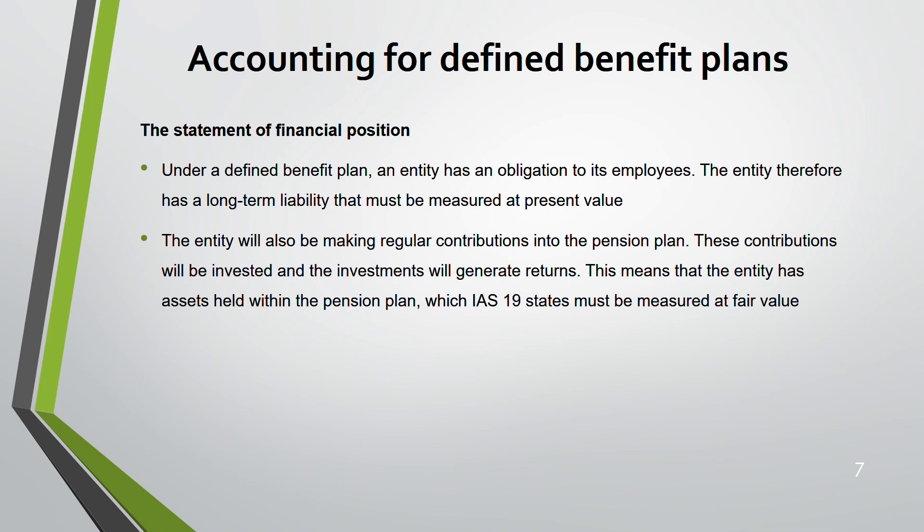The entity also makes regular contributions into the plan, which are invested to generate returns — these are the plan assets, held within the pension plan, measured at fair value. So there are two things to remember: a defined benefit liability measured at present value, and a defined benefit asset measured at fair value.